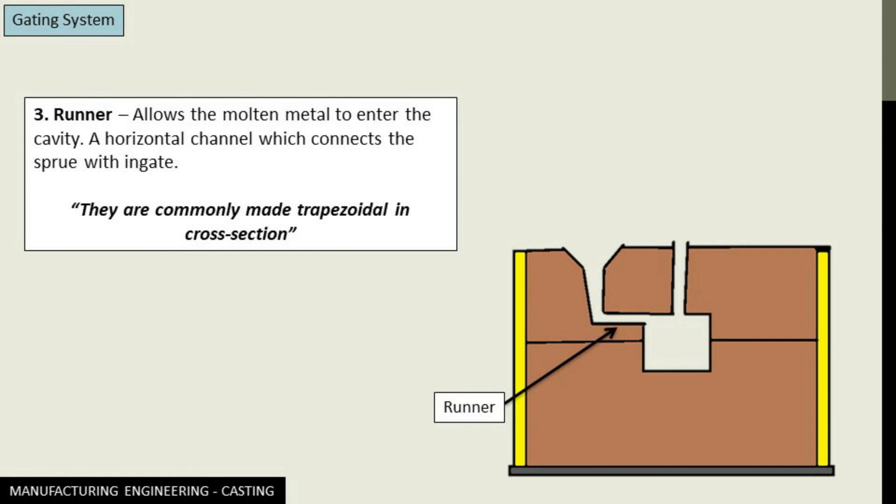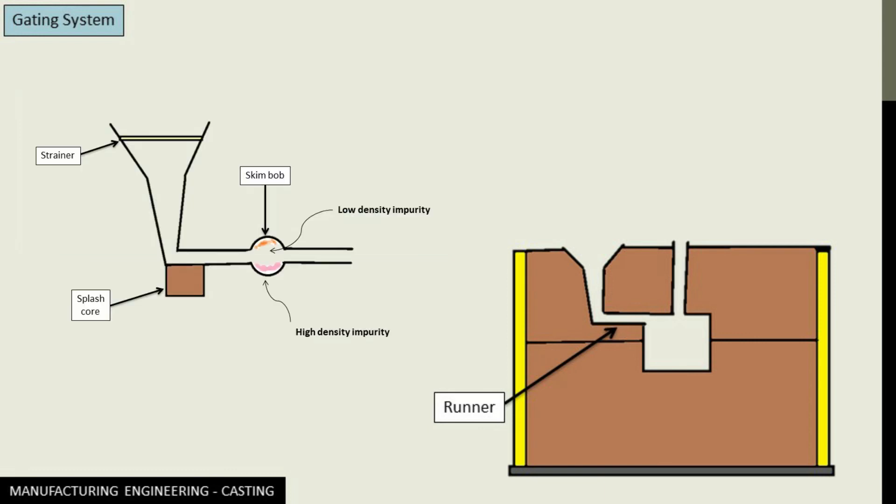Now this runner is commonly made trapezoidal in cross section. And without the runner, here a major casting defect can take place that is called sand erosion. That means deposit of sand right below the sprue.